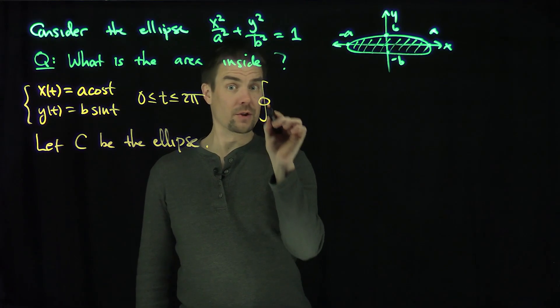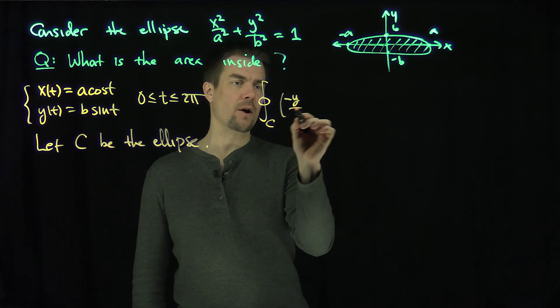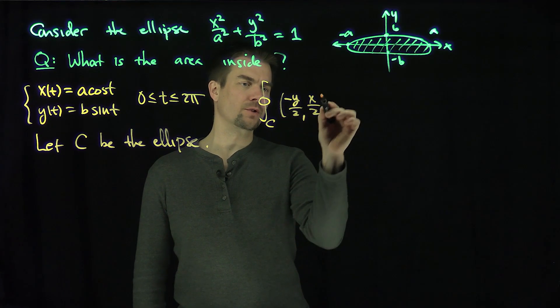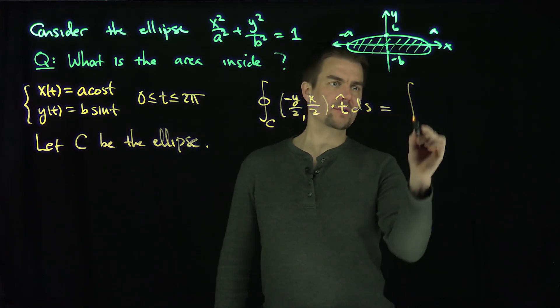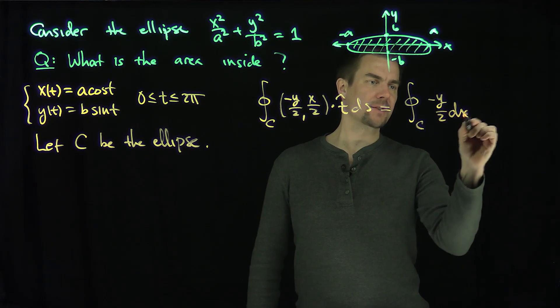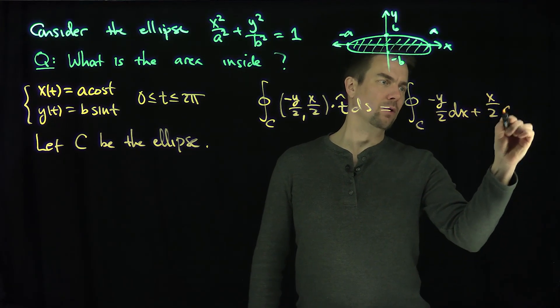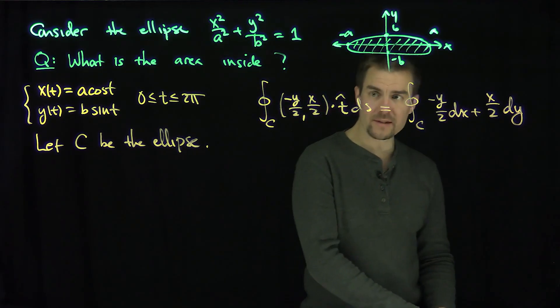I'd like to find the flow over this closed curve of this special vector field, which is negative y over 2 comma x over 2 dot t hat ds, which in some text is written like this: the integral over c of negative y over 2 dx plus x over 2 dy. They mean this is the exact same thing. We can apply Green's theorem to this.